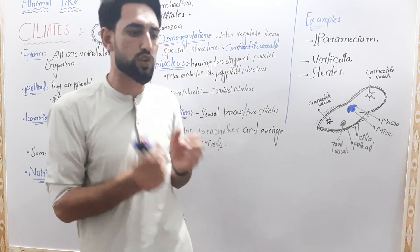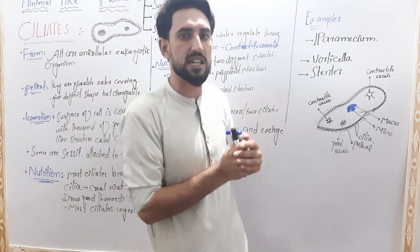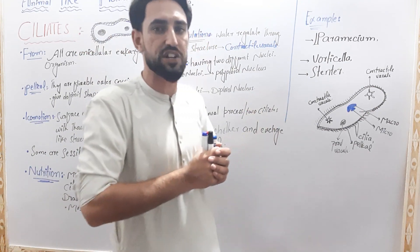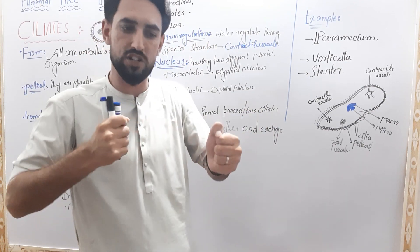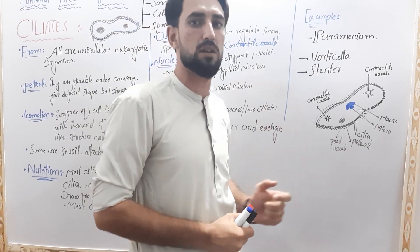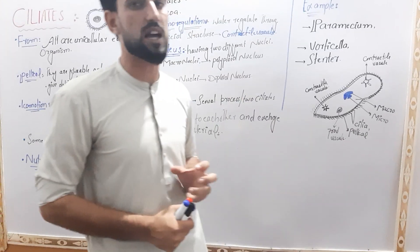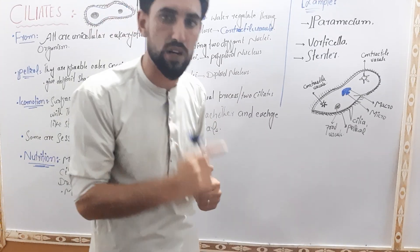There is a membrane-attached structure that uses pressure to get water out of the body. This contractile vacuole functions to maintain and regulate water balance in the cell.